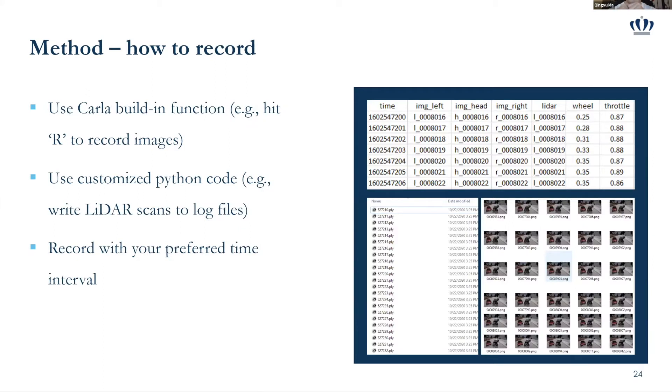And then there are several ways I can use for recording things. The first one I can use is I can use Carla build-in function, such as hit R button to record the image. And this is the image recorded. And the second way I can use is I can write some Python code to write the LIDAR scan to the log file by myself. And also when I'm doing the program, I can control like the time interval or frequency I want to record. For example, I can record one image for every second because by default, the frequency is too large, which will make the computer a little slow. So I may also change different time interval based on my need.